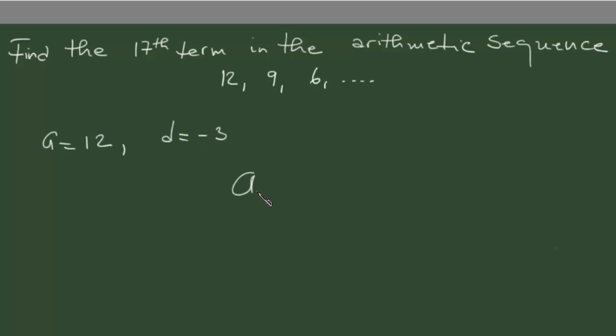Therefore we're gonna use this formula: a_n, I mean a_n in this case would be 17, but our formula will be a equals a plus n minus 1 times d.